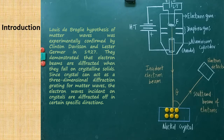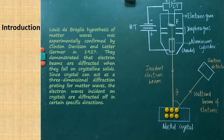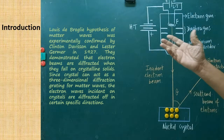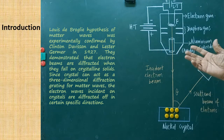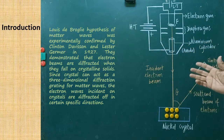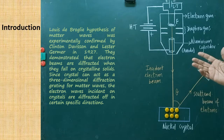Today, we are going to learn about the Davison-Germer experiment. This is one of the important experiments performed by two scientists called Clinton Davison and Lester Germer in 1927. Louis de Broglie's hypothesis of matter waves was experimentally confirmed by Clinton Davison and Lester Germer in 1927.